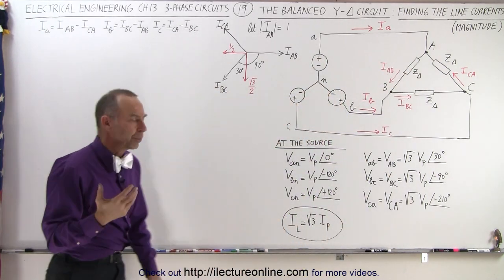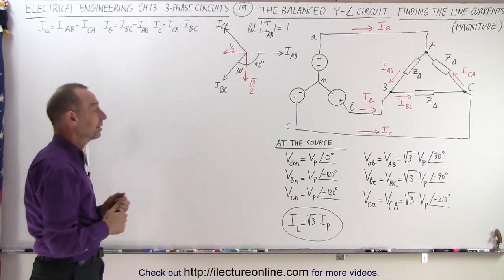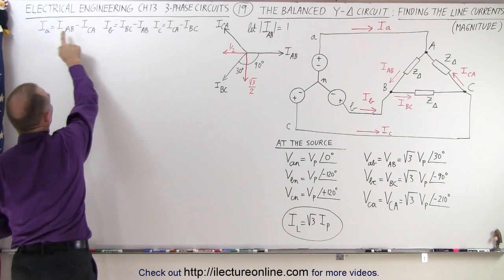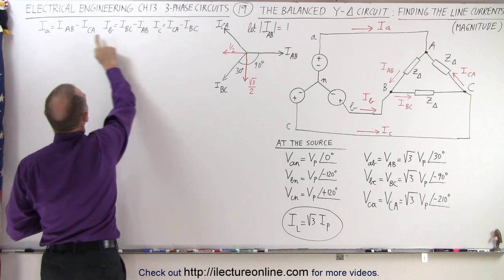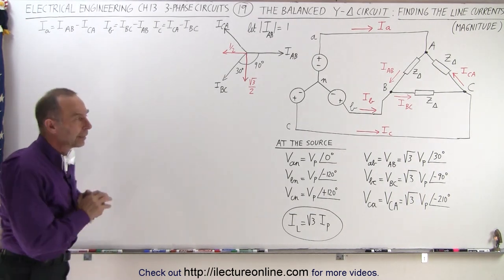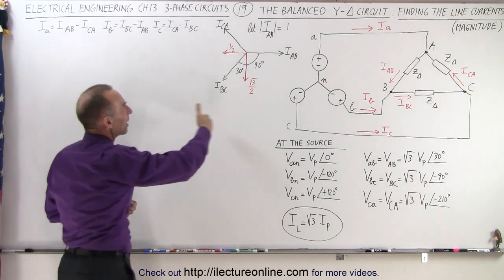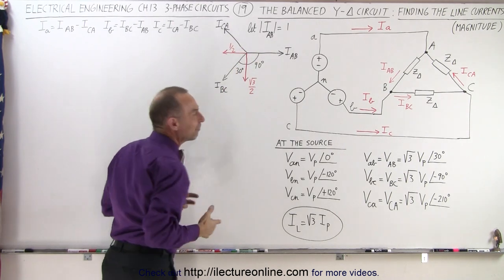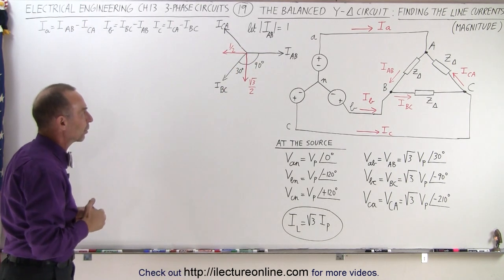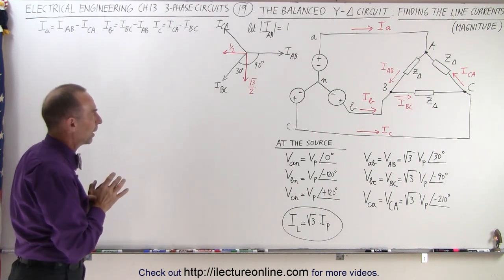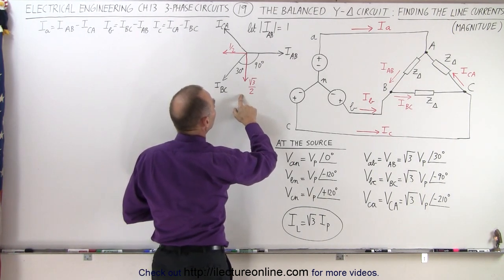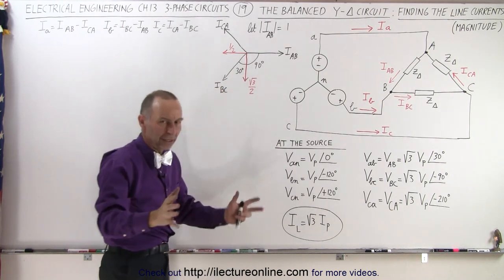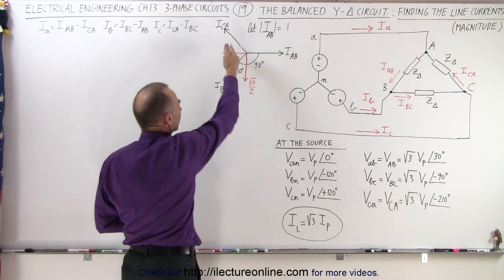So how do we confirm that's indeed the case? We're going to go back to what we discovered in the previous video, that we had the line currents Ia, Ib, and Ic in terms of the phase currents through the load. Using a phasor diagram, we can see the relationship between their magnitudes — they're all the same — but their phase directions differ. We'll simplify by normalizing the magnitude of Iab, Ica, and Ibc to 1.